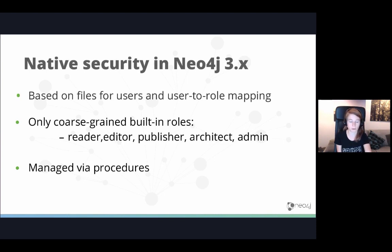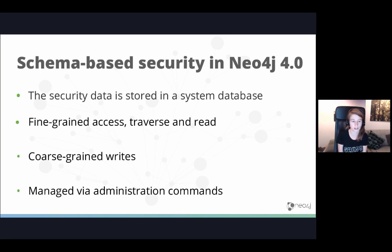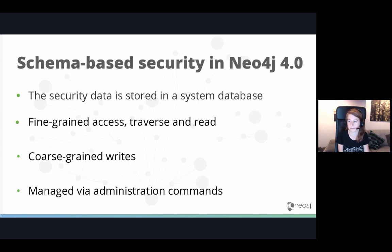In the upcoming 4.0 release, we have some new stuff. We now have much more fine-grained, schema-based security. As mentioned in the keynote, Neo4j 4.0 supports multiple databases. One of these — available in both enterprise and community — is a system database, where security data is stored instead of in files. We thought: since many customers use Neo4j to model security, why couldn't we store our own security data in a database? If you have questions, please type them in the Q&A tab and I'll answer them after the presentation.